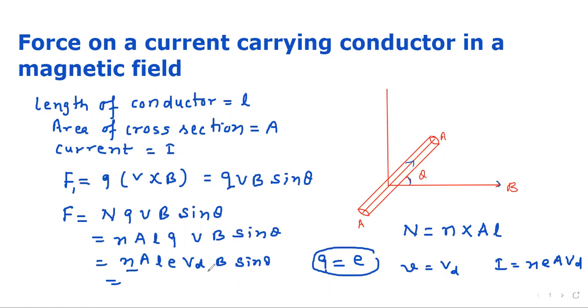Now, I equals n e A V_D. So here, n e A V_D will be replaced by I. So we'll be left with I L B sin theta. This is our required expression.